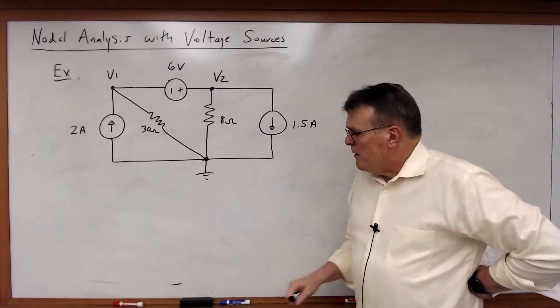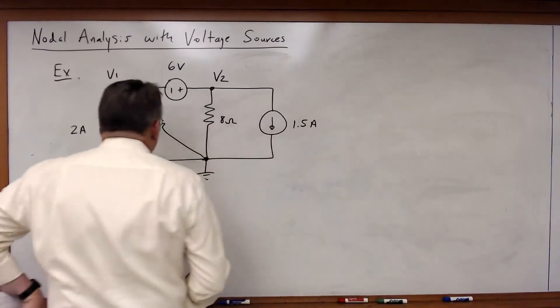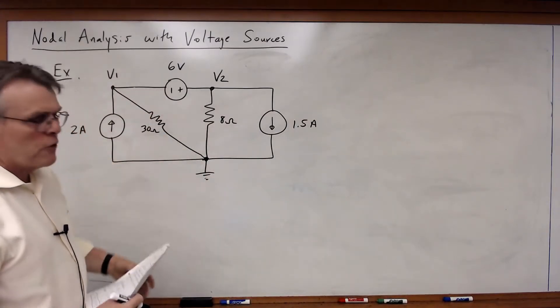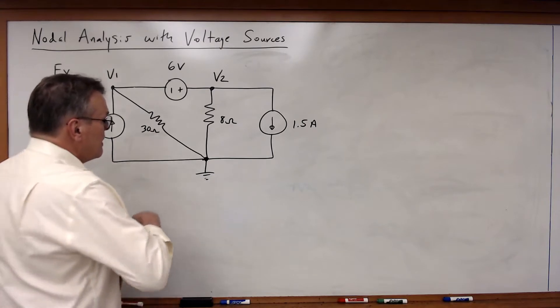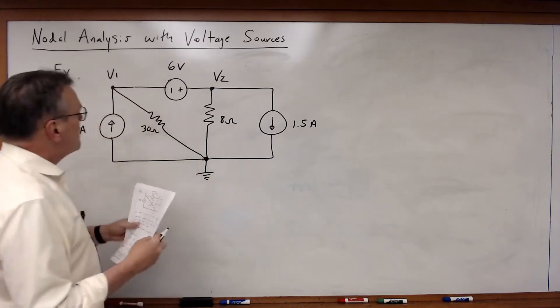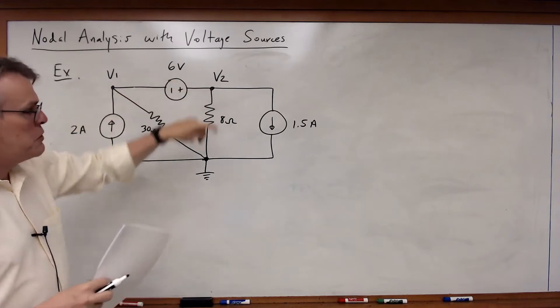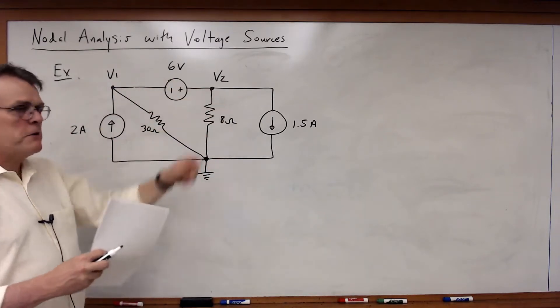Now let's look at another example, and this is a kind of interesting one. Here I have taken a circuit and I have selected the ground ahead of time in such a way that I have got a voltage source that is spanning two nodes but neither one is defined.